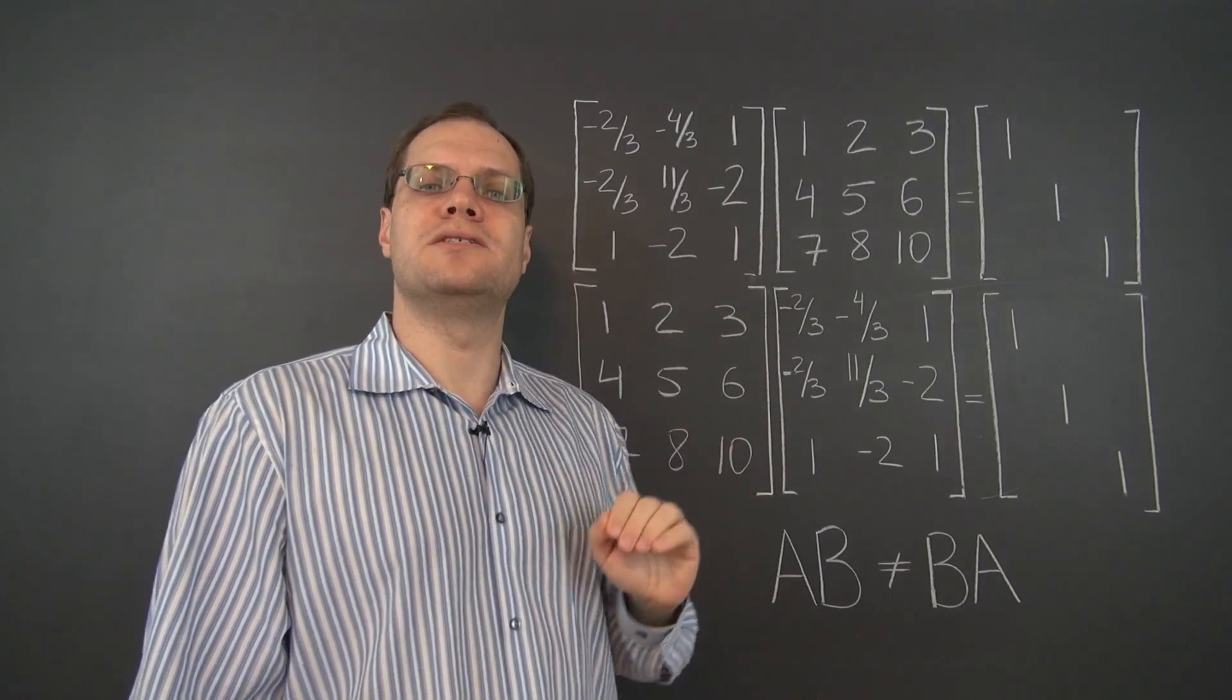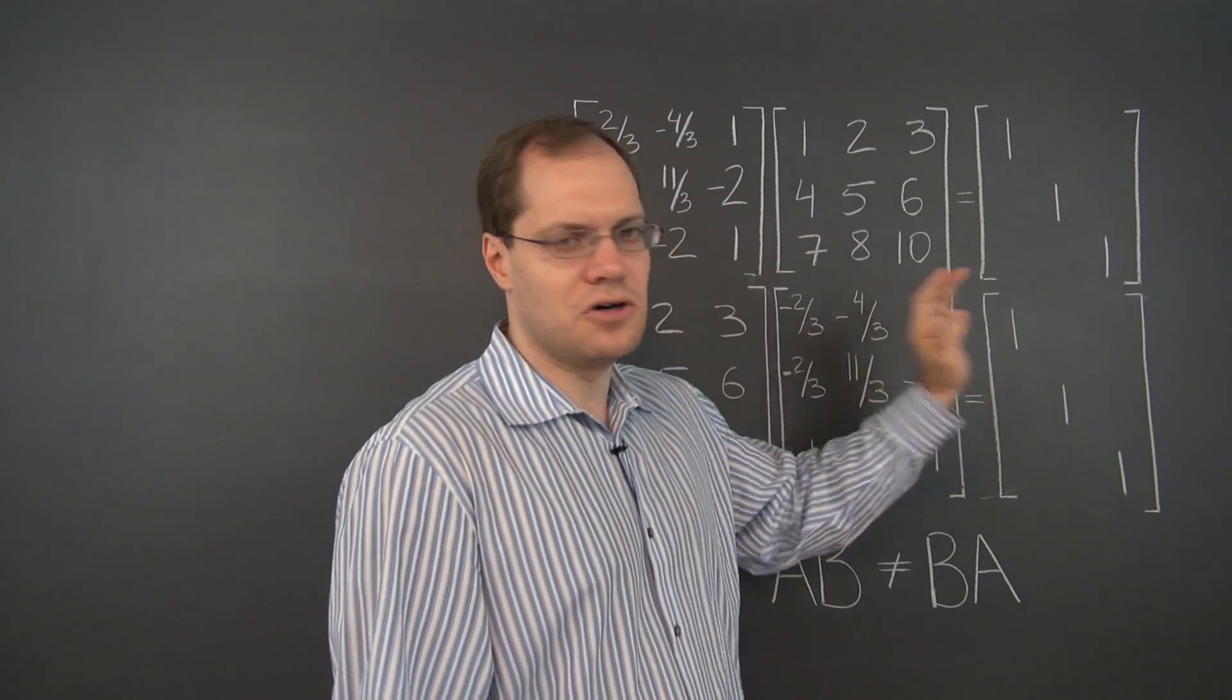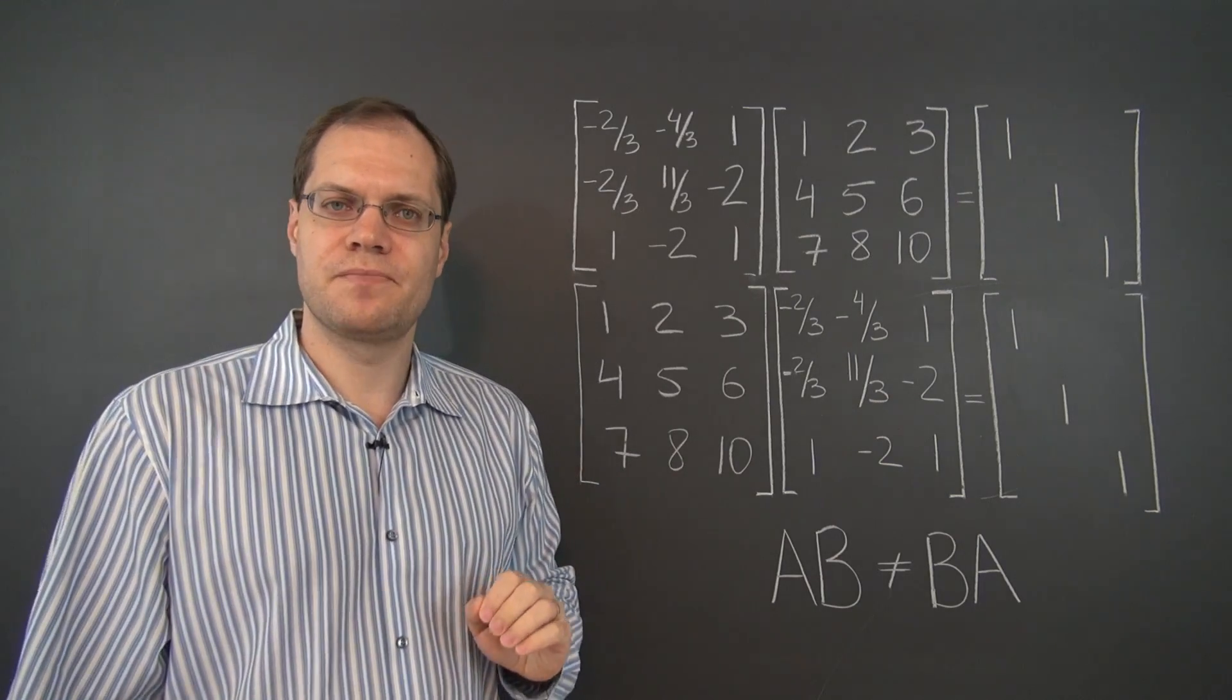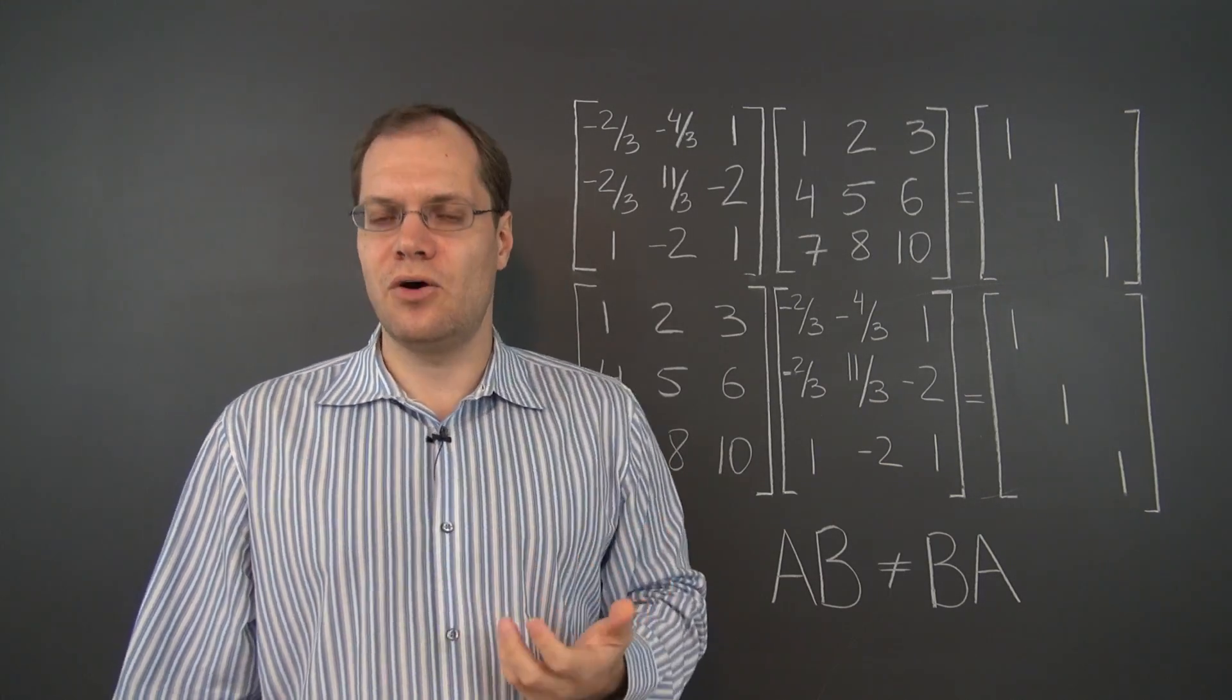It doesn't matter whether you multiply by the identity on the right or on the left, the result is always the other matrix. But with the identity we can see rather easily why that holds.